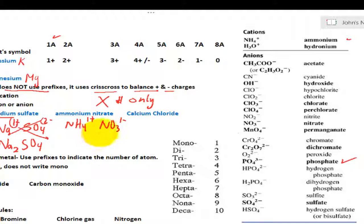So we don't have to do any criss-cross at all. We can just write NH4NO3 without using parentheses to group the individual polyatomic ions, because there is only one of each.